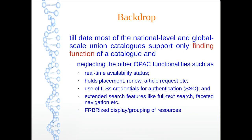Before making a quantum jump into the results, let us do some fact-finding related to national-level and global-scale union catalogs. Most Indian union catalogs support only finding functions and neglect OPAC functionalities like real-time item availability status, hold preference, ILS-based authentication, extended search features like full-text search, faceted navigation, and most importantly FRBR display or grouping of resources.